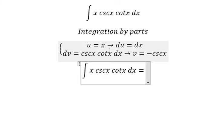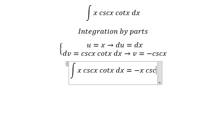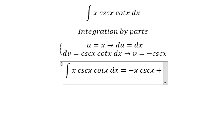So we have u multiplied by v, so we have negative x cosecant of x. Next, du multiplied by v, but we have the negative side and we have another negative in here, so you got positive.